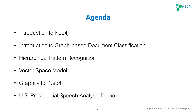Here's our agenda for today. First, I'll do an introduction to Neo4j — a quick overview of the browser and the property graph data model. Then an introduction to graph-based document classification, followed by Hierarchical Pattern Recognition, an algorithm I created to build a natural language parsing model from training data. Then a vector space model using cosine similarity for recommended texts, an overview of the Graphify unmanaged extension, and finally a demo of a U.S. presidential speech analysis.